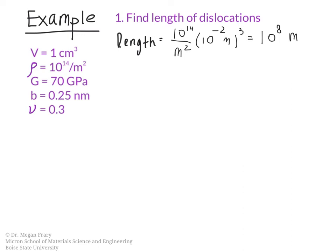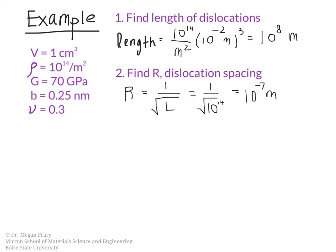The next thing we want to do is find capital R, the dislocation spacing. We find R through this relationship, 1 over the square root of L, and we end up with 10 to the negative 7 meters. So this is telling us that our dislocations are 100 nanometers apart. So we have our value for capital R and we're ready to move on and make our calculation.